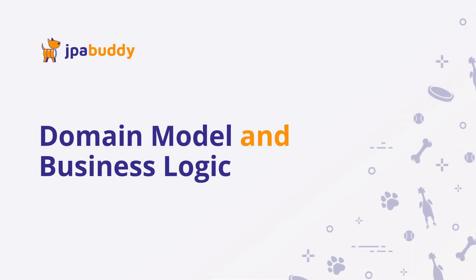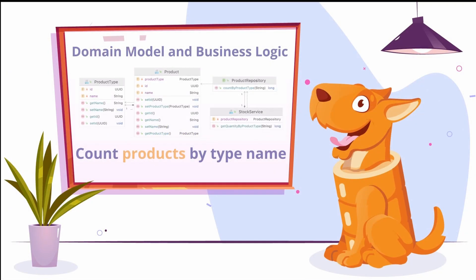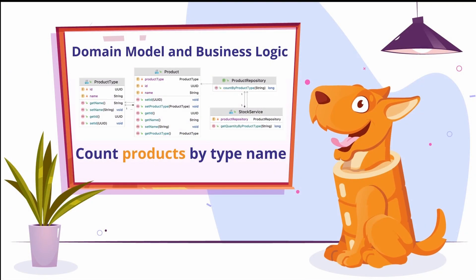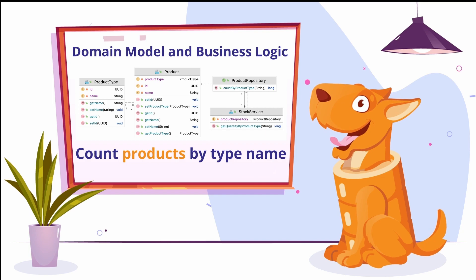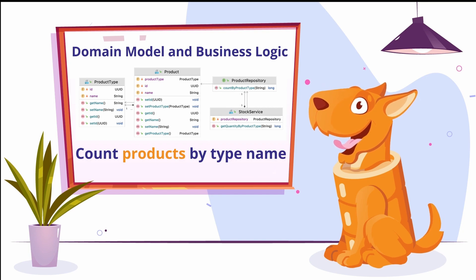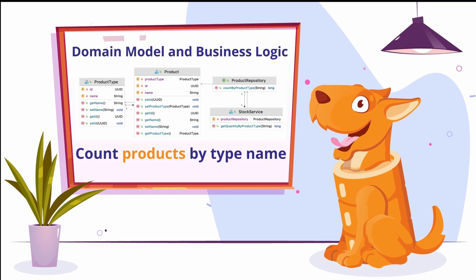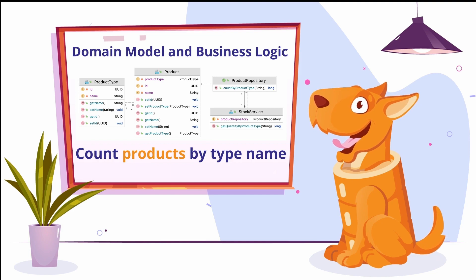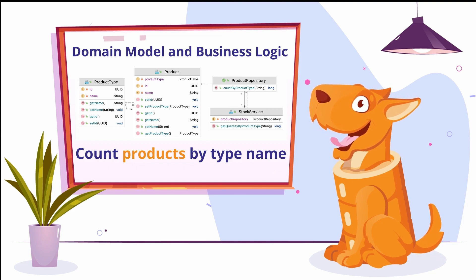The application data model consists of two entities: product and product type. Product refers to product type as many-to-one. In the application, we'll implement business logic for getting the amount of the product of a particular type.